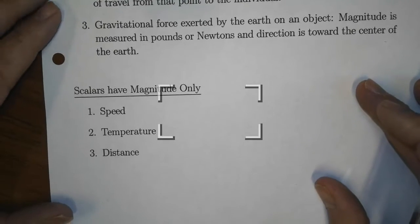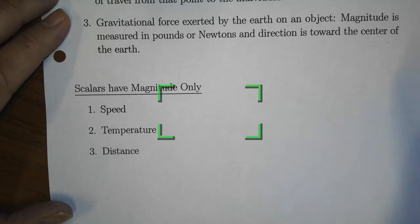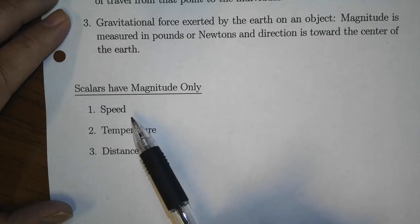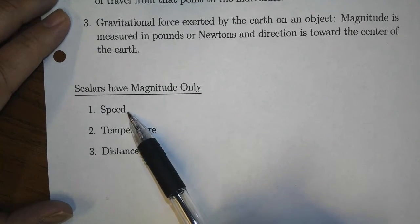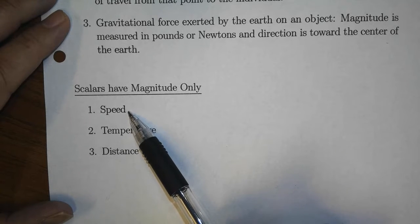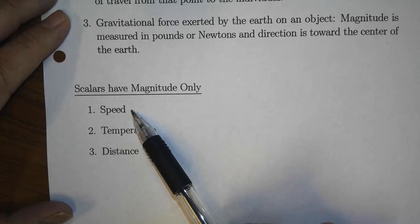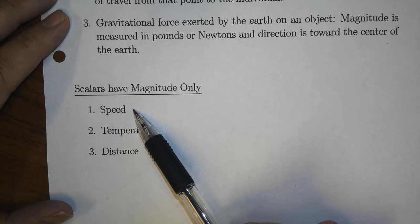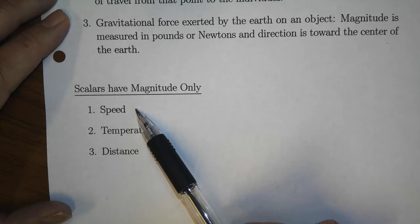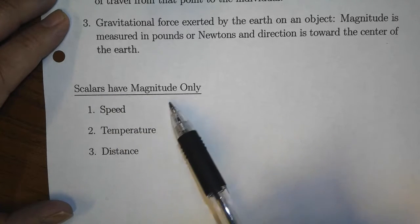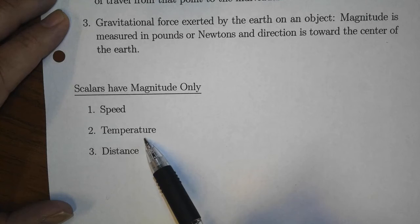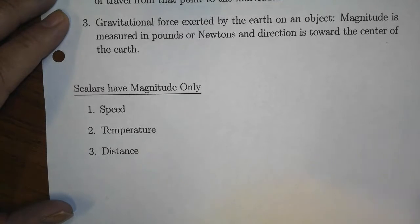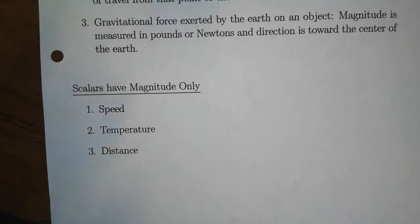Scalars are quantities that have magnitude only. Speed is an example of a scalar — we could be driving 50 miles an hour, but unless we specify the direction, we don't have a vector yet. Temperature and distance are also examples of scalars.